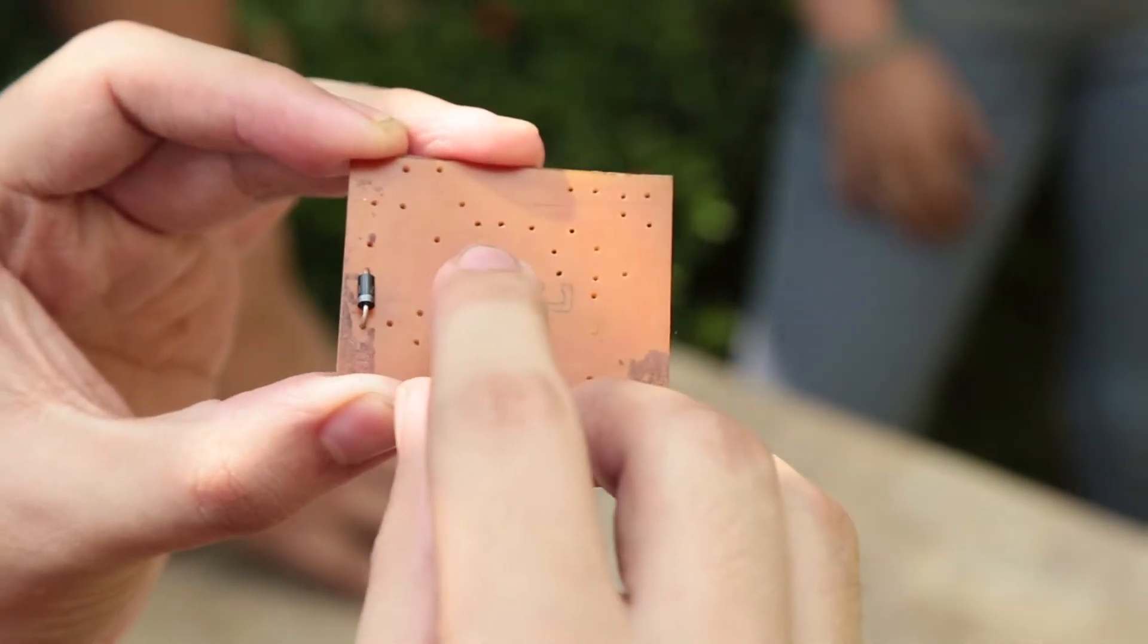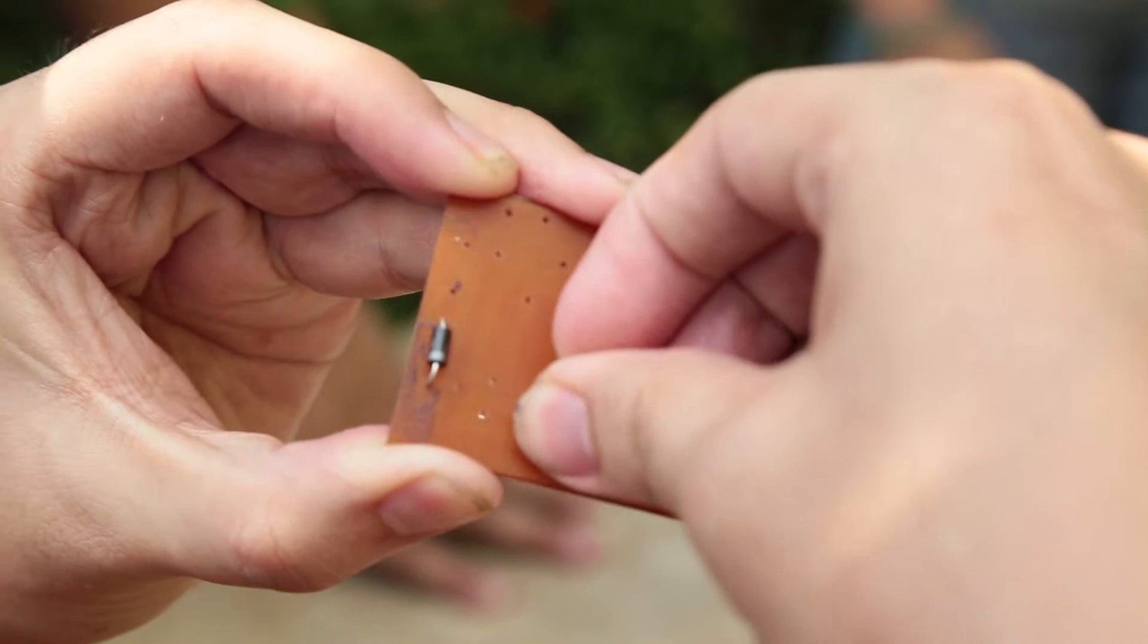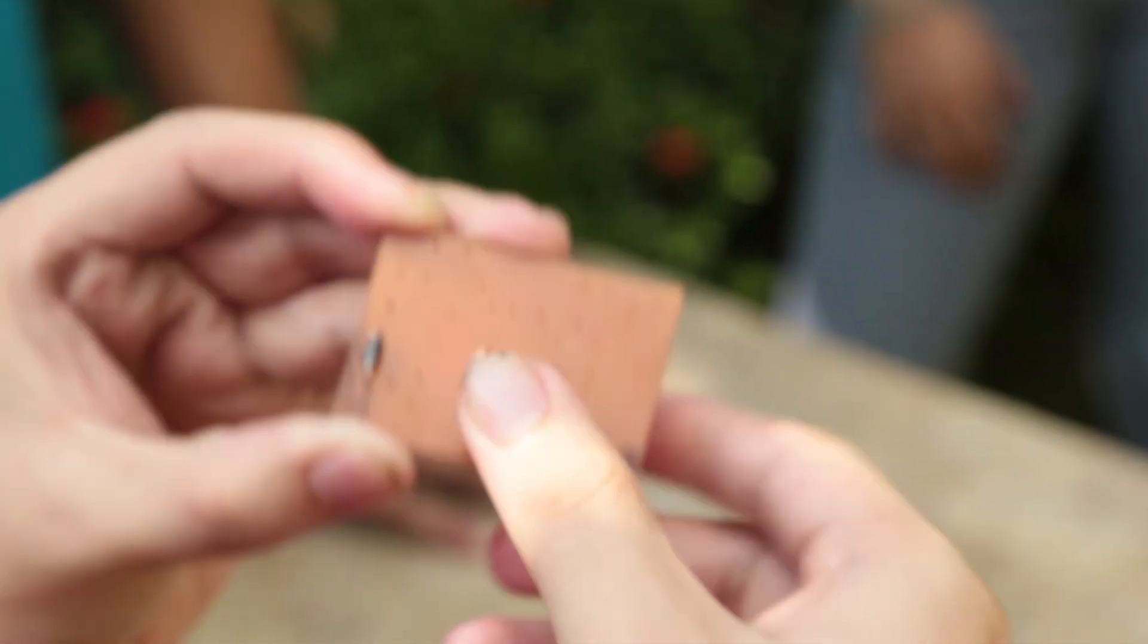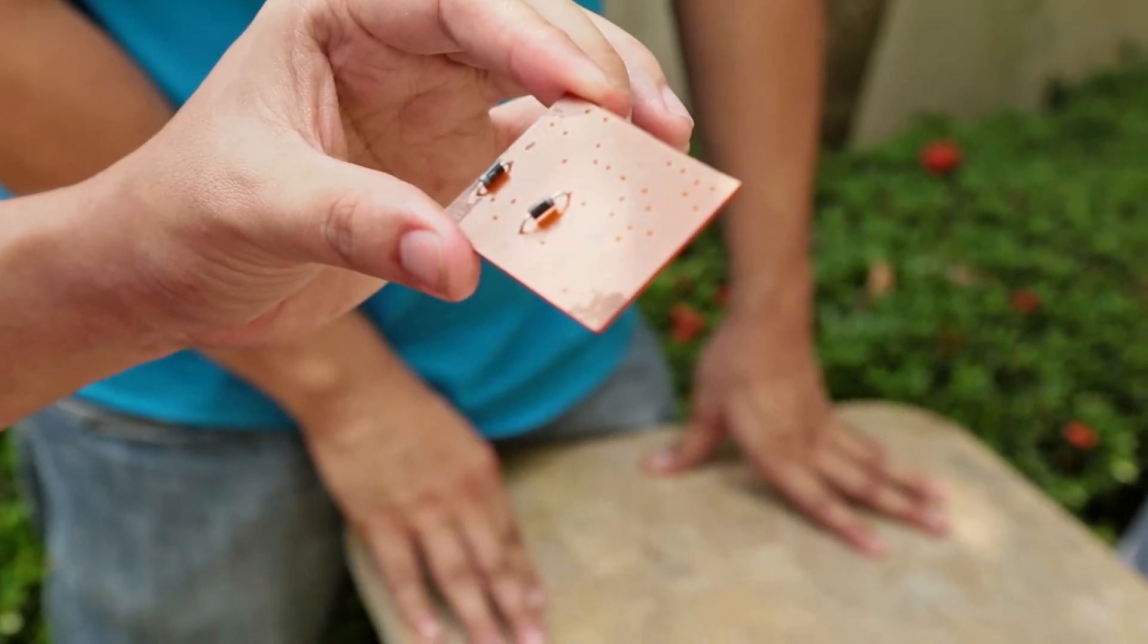Remember, when inserting components, make sure the parts are as close to the board as possible. You don't want parts hanging around because they might break or get worn out due to constant movement. You want it as close, as flat as possible to the board.